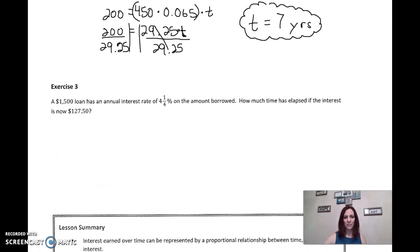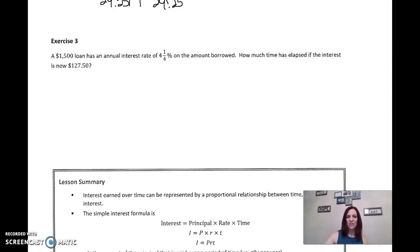So one more example, a $1,500 loan has an annual, that's yearly interest rate of four and one fourth percent on the amount borrowed. How much time? We're looking at time again. If the interest is now $127.50. All right. This is a $1,500 loan. That's the principal. It has an annual interest rate of four and one fourth. So my rate equals four and one fourth percent. Now one fourth, one divided by four is 0.25. So that's like saying 4.25 percent, which as a decimal, one, two spots over 0.0425. And it's saying that the interest is now $127.50. That's I.